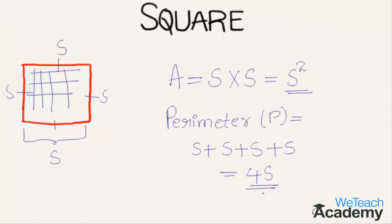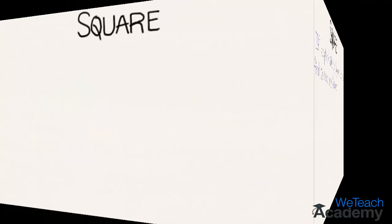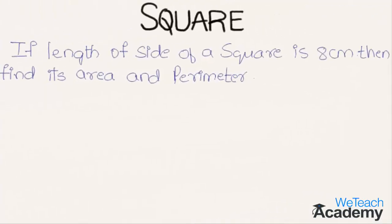Now let us proceed and discuss a few examples on these formulas. The given example is: if the length of the side of a square is 8 centimeters, then find its area and perimeter.